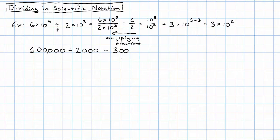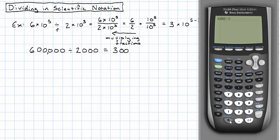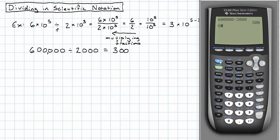That seems reasonable. Let's check with the calculator. I'm going to take 600,000 divided by 2,000. And that really does give me 300. In scientific notation mode, 6 times 10 to the fifth divided by 2 times 10 to the third is 3 times 10 to the second.